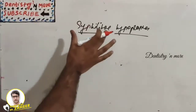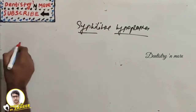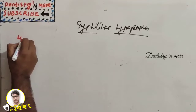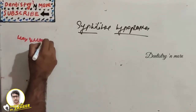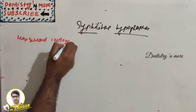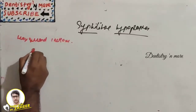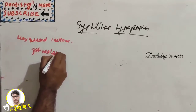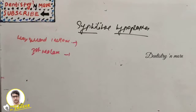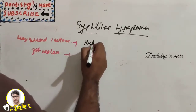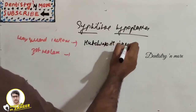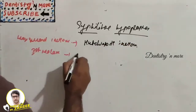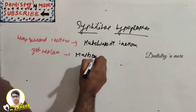In patients with congenital syphilis, the most commonly involved teeth are the maxillary and mandibular permanent incisors and the first molars. The affected incisors are known as Hutchinson's incisors, while the affected molars have several names including mulberry molars.